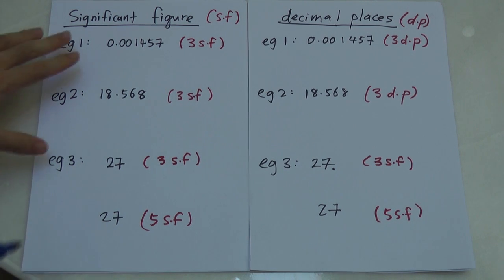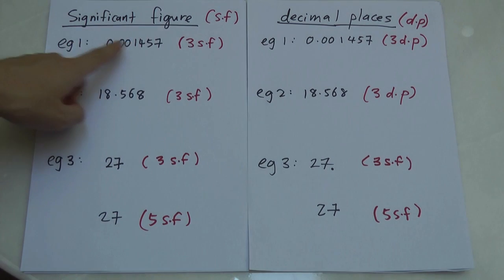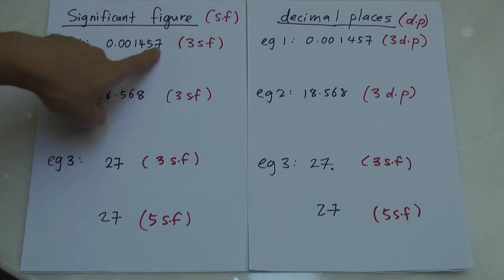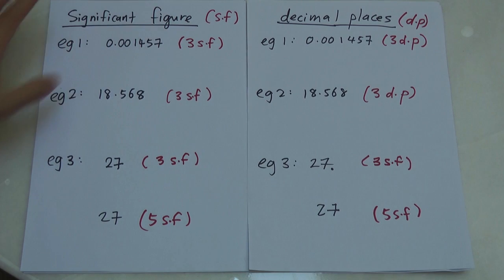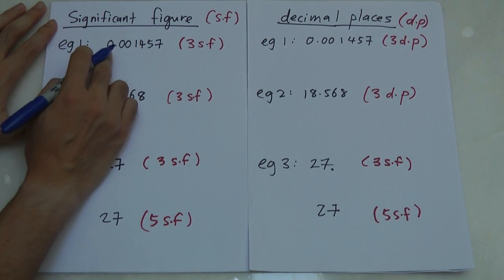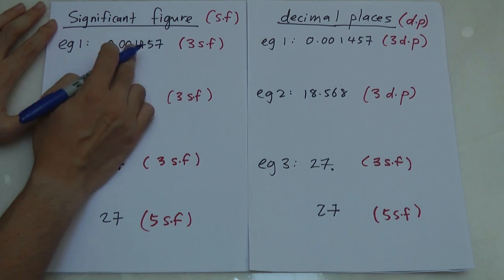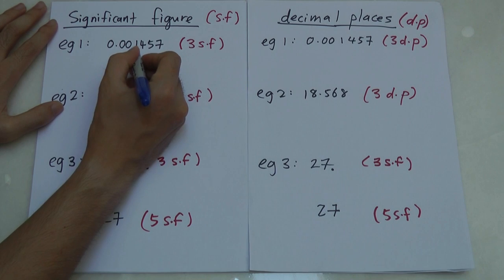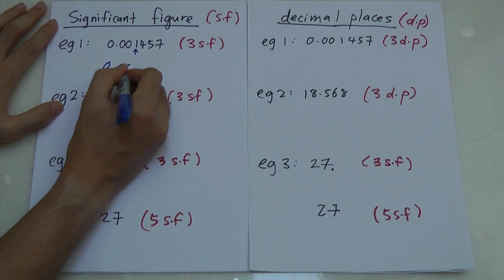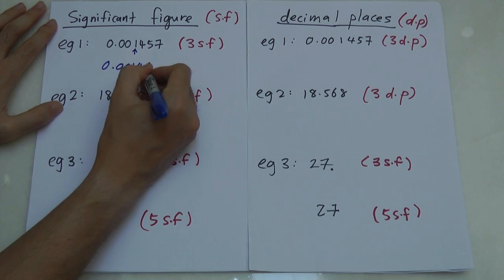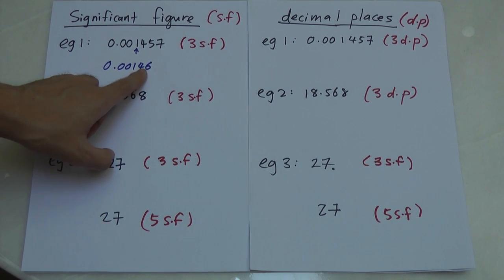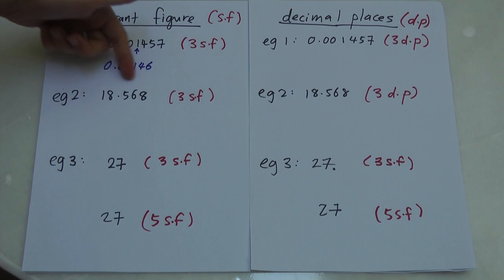I'll use the same example for both so it's easier to differentiate. Take 0.001457 and round to three significant figures. All the leading zeros at the front are not counted, so we start from 1 — that's the first significant figure — then 4, then 5. So three significant figures gives us 0.00146.